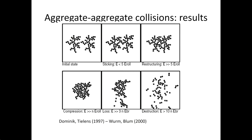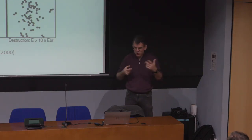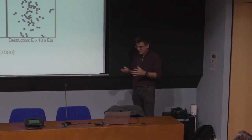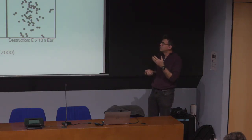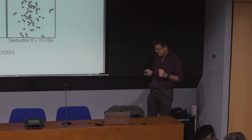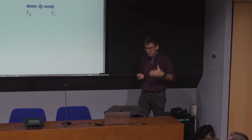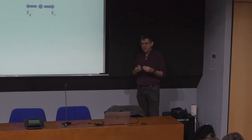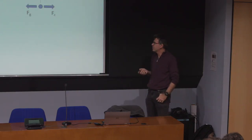The kinetic energy of collisions depends on the motion of the aggregates, which can be due to thermal properties in the disk, turbulence in the disk, or differential migration speeds toward the star. We need to discuss the migration of grains because this is the most important concept for computing the energy with which two particles or two aggregates can collide with each other.